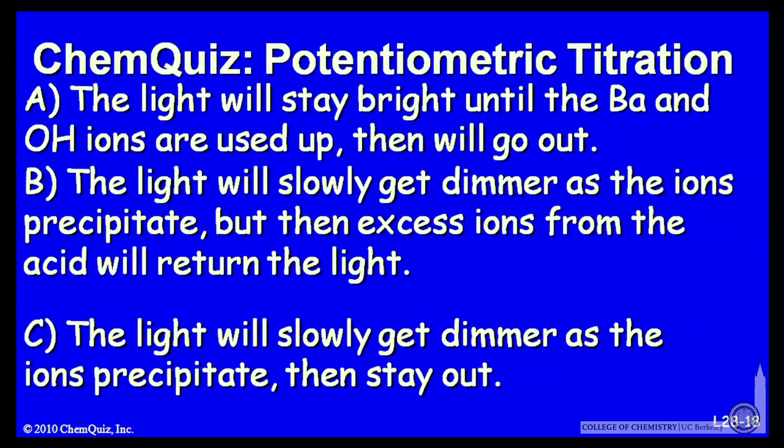Or C, the light will slowly get dimmer as the ions precipitate, then stay out. Think about those three possible explanations and make a selection.